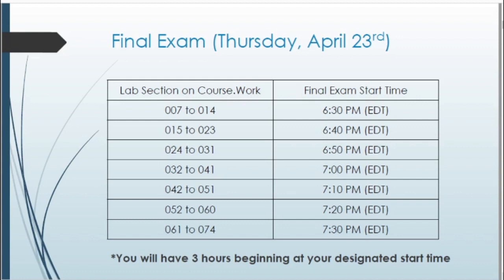You'll have three hours beginning at your designated start time. So if you start at 6:30 you'll have until 9:30, and if you are in lab sections anywhere between 61 and 74 and you start at 7:30 p.m., you'll have three hours and end at 10:30 p.m. Make a note of what section you're in and what your start time for the final will be.